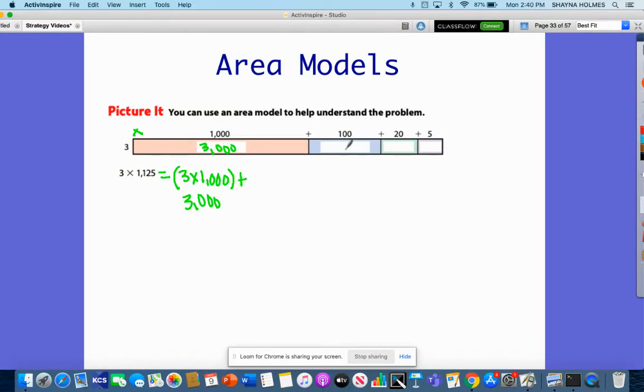Now I'm going to multiply my hundred. I have 3 times 100, and 3 times 100 is 300. I've multiplied it and put it in parentheses. Then I'm adding, because I can't forget about these, I've got to add all of my products together.